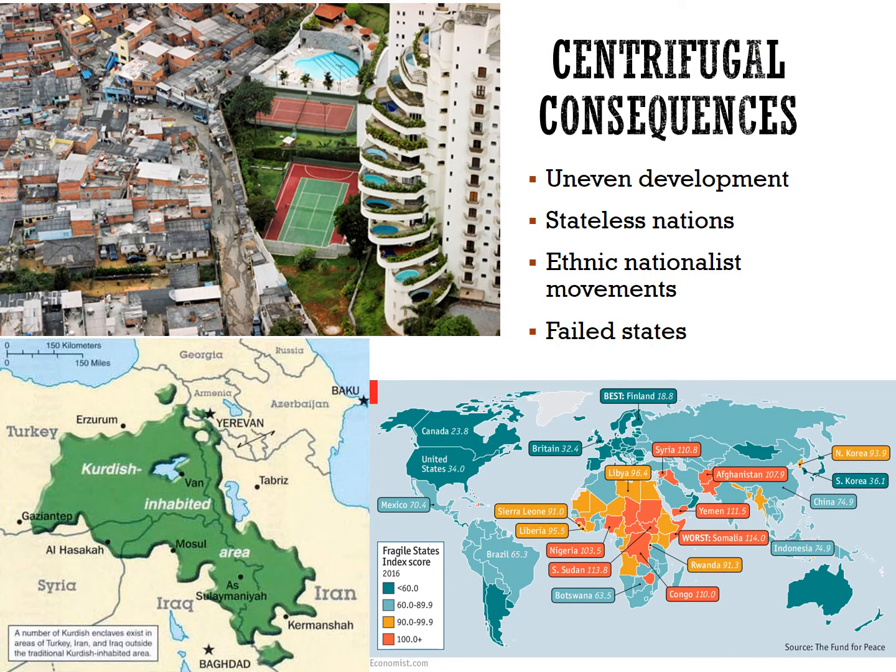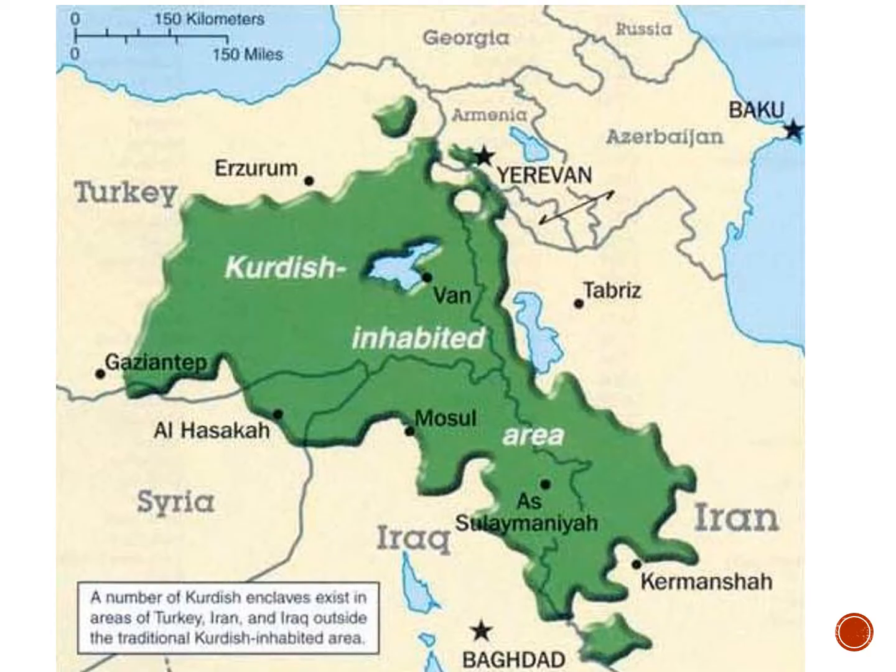This can be especially polarizing in countries that contain a stateless nation. The Kurds are the fourth largest ethnicity in Southwest Asia, yet do not have a state of their own. Combined with oppression for their religious and ethnic diversity, they represent a centrifugal force in the countries where they reside. The Kurds make up 20% of Turkey's population, and the Turkish president has designated a militant Kurdish group as a terrorist organization. These stateless nations, when desiring self-determination, may become nationalist movements pushing for independence — which the Kurds are already pursuing.